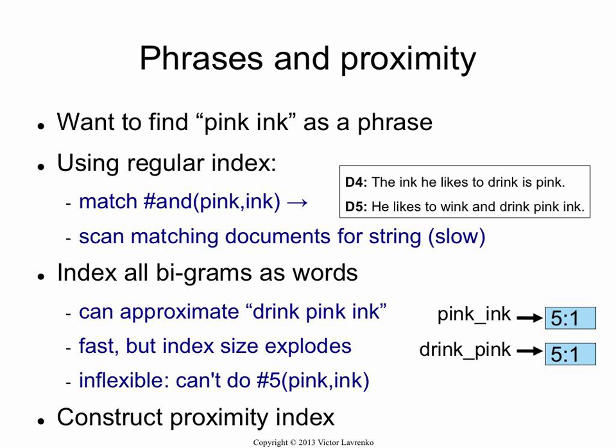Another cheap way to do this — and this is actually surprisingly common — is you could index term pairs as if they were single terms. So I could re-tokenize the document such that 'pink ink' is a phrase and 'drink pink' is a phrase. So D5, for example, 'he likes' would be a bigram, 'likes to' be a bigram, 'drink pink' is a bigram, 'pink ink' is a bigram. When I have 'pink ink' as a phrasal query, I could just convert it to the token 'pink_ink' and use my normal retrieval methods. So that is fast — that's the upside. The downside is your index size will explode because now you're forming pairs of individual indexing terms, so it's going to be rather large.